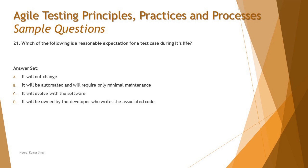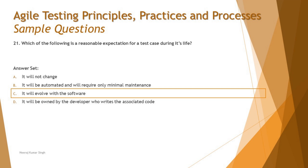Option D might confuse you if you're thinking about TDD, where the developer does own the test. But this question is about the test life cycle in general, not specifically about TDD. They're trying to distract you into thinking about TDD and picking D. The right answer is C — a test case will evolve with the software over a period of time, because as the product changes, the test cases also need to evolve accordingly to remain effective.